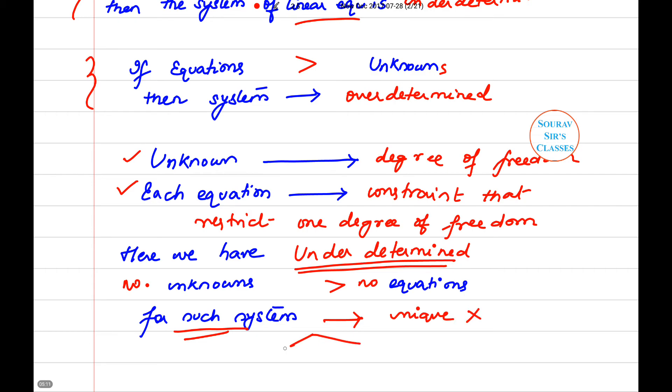Unique solution is not possible. What we can get is no solution, or we can get infinitely many solutions.